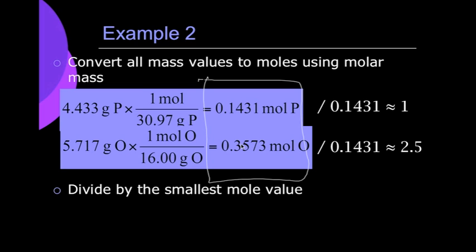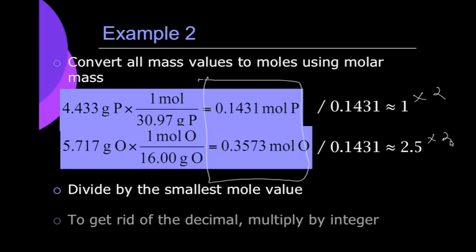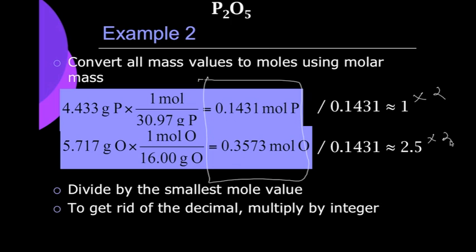Now we cannot round 2.5 up to 3. So we go ahead and what we're going to do is we're going to multiply both of these guys by 2 to get the simplest ratio possible. Because a 1 to 2.5 ratio is always going to come out to be a 2 to 5. So we multiply it by 2 and we get diphosphorus pentoxide.